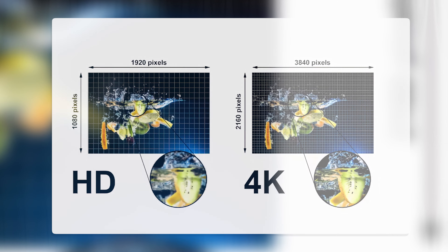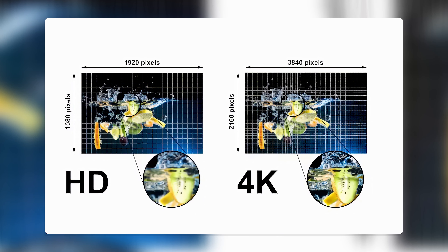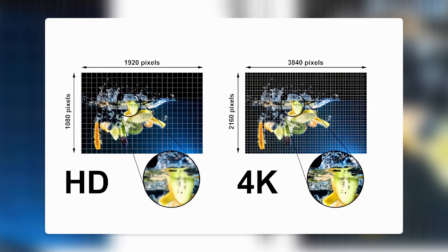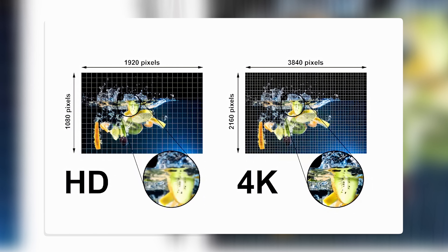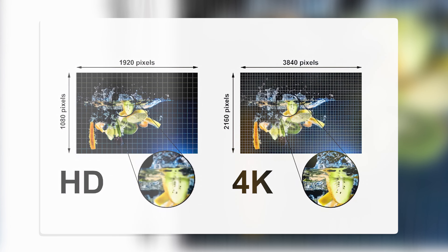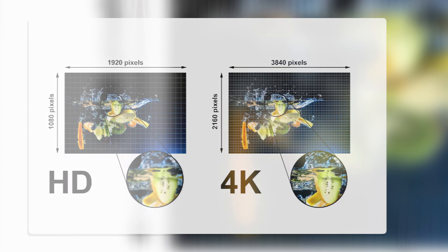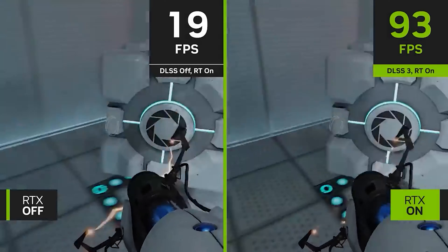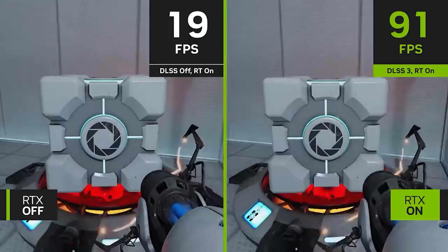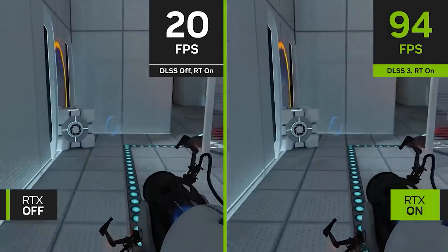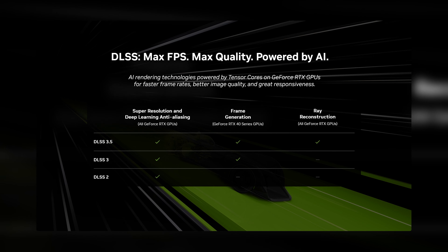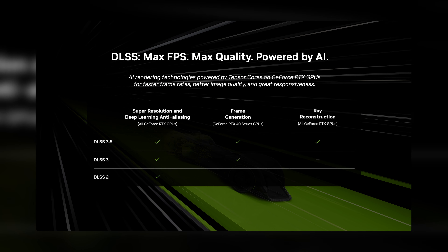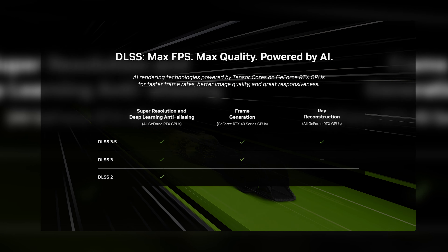Another new feature is called Dynamic Resolution Scaling, which is a technique that adjusts the resolution of your games according to your GPU load. Dynamic Resolution Scaling allows you to set a target frame rate for your games, and then DLSS will automatically scale the resolution up or down to meet that target. This way, you can optimize your gaming performance and quality according to your preferences and hardware capabilities.